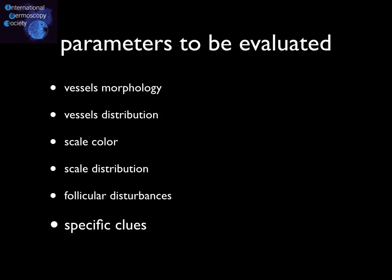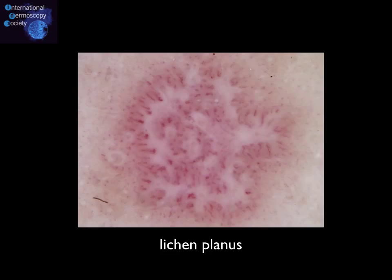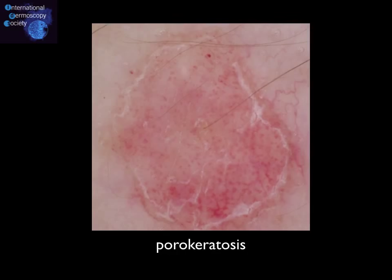Finally, specific clues do exist and are absolutely predictive of a specific diagnosis. For example, the Wickham striae can only be seen in lichen planus lesions, and the peripheral collarette corresponding histopathologically to the so-called cornoid lamella is absolutely typical of porokeratosis.